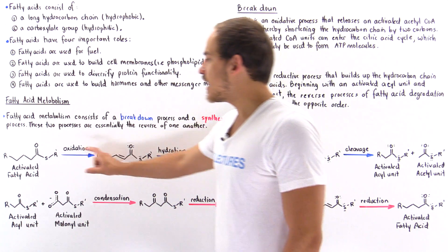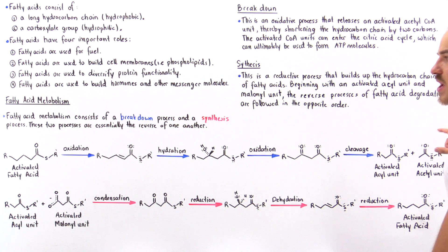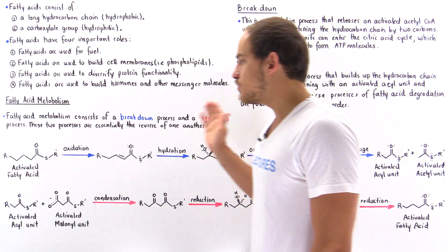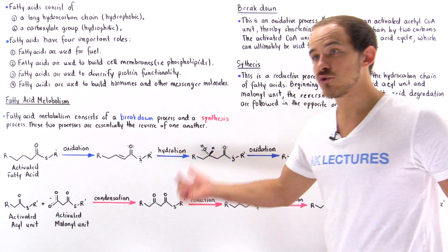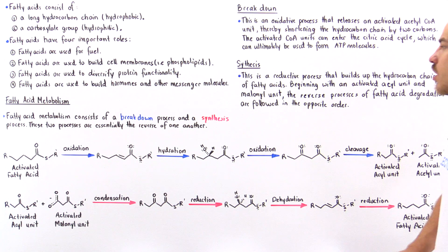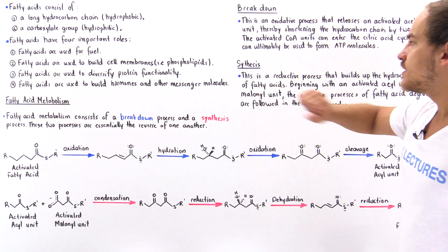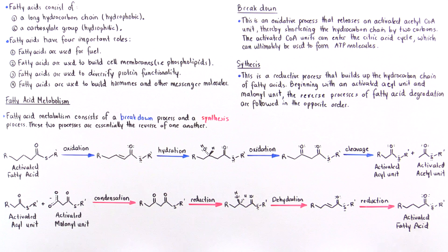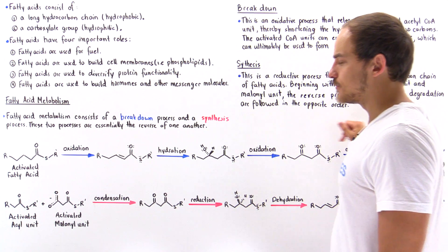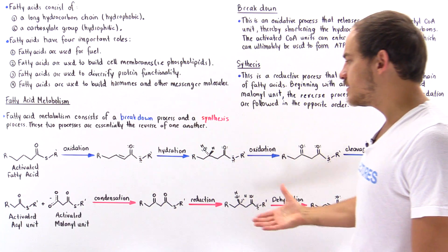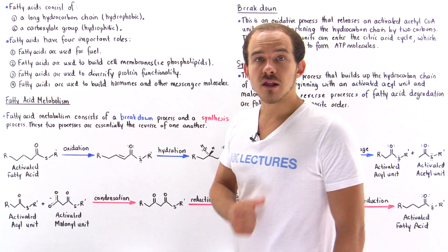So we see that one cycle of fatty acid breakdown shortens the carbon chain by two carbons, while one cycle of synthesis increases the carbon chain by two carbons. The synthesis process is a reductive process that builds up the hydrocarbon chain of fatty acids, beginning with the activated acyl unit and the malonyl unit, following the reverse processes of fatty acid degradation in the opposite order. We'll talk about the details of these individual steps in the lectures to come.